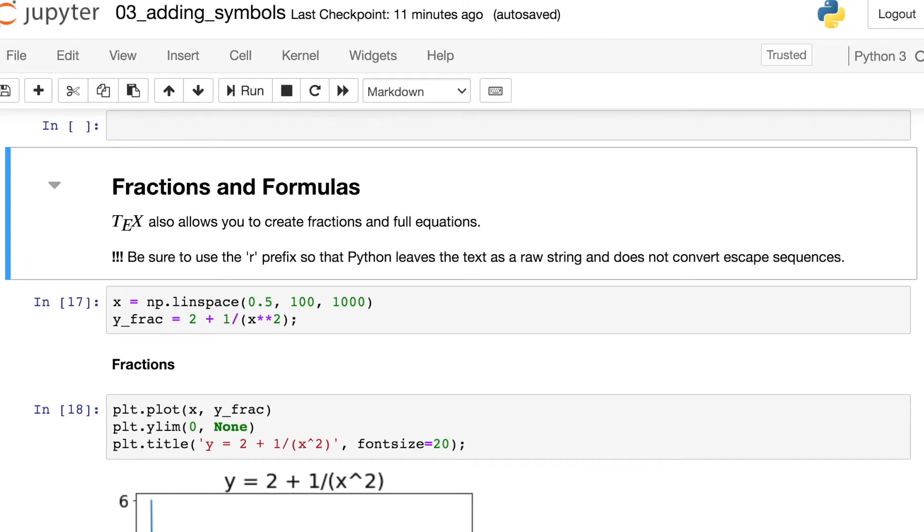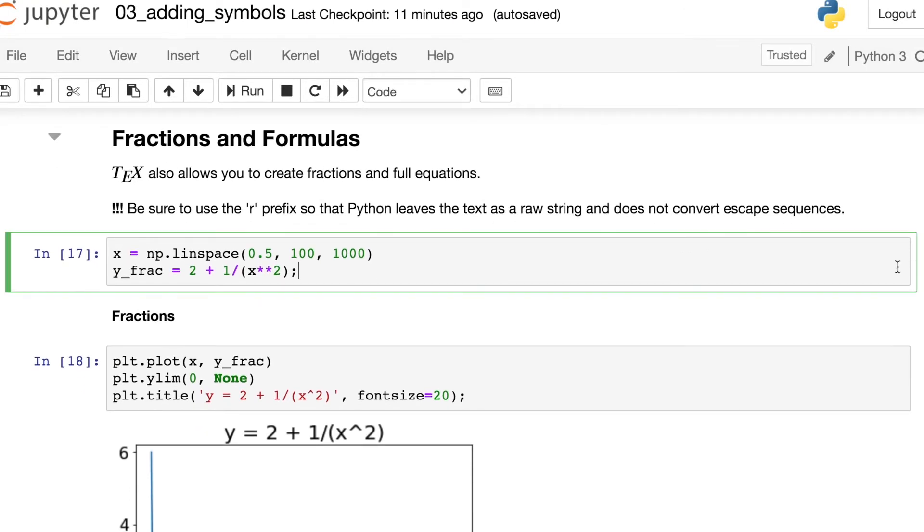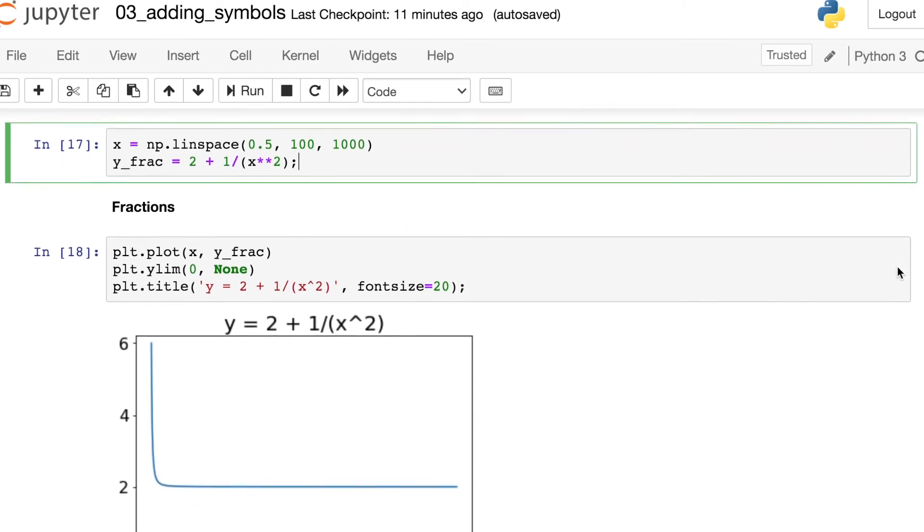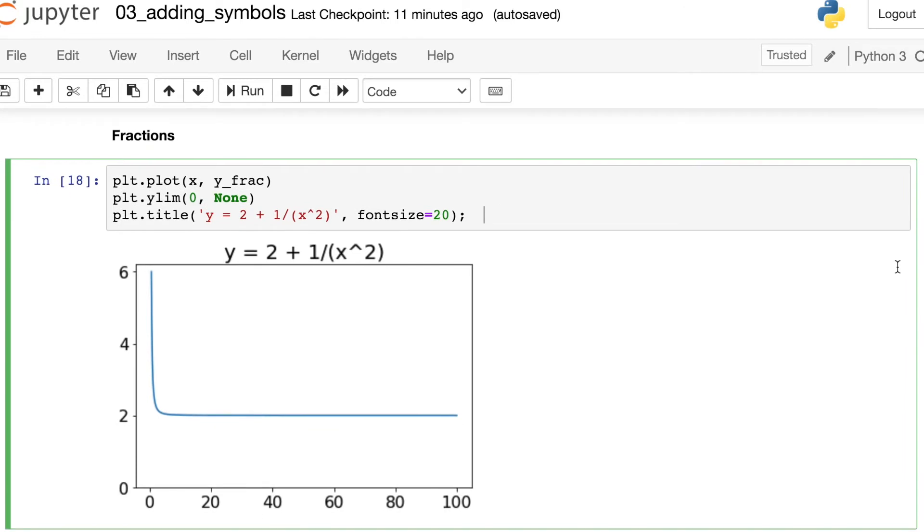So I've gone ahead and created some new data here. Y frac is equal to two plus one over X squared. And so if you've tried to write this in matplotlib before, maybe you've written something like this using the forward slash to indicate a fraction.